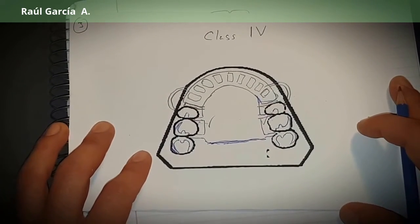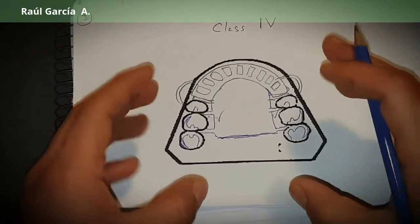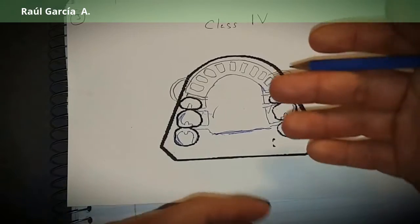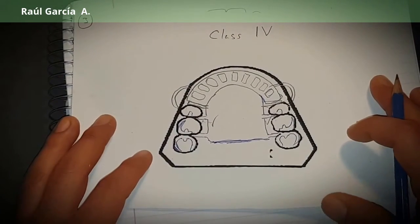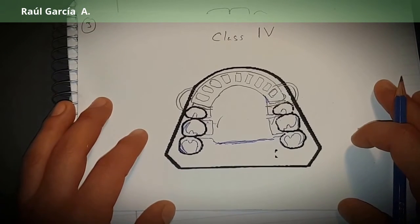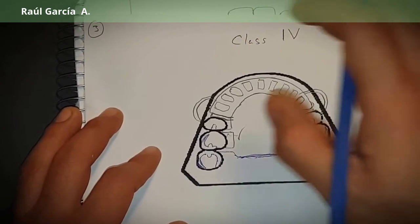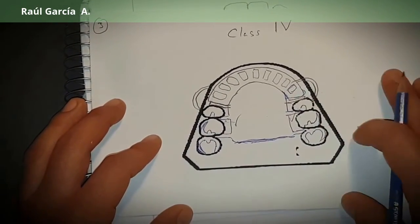So this is the variation of the Class 4. The mechanics, that's why we call the mechanics are reversed in a Class 4 Kennedy because of this. This is the consideration that you have to take into account when you're designing a Class 4: the amount of teeth that you start losing and how to protect the abutment teeth and the mechanics.